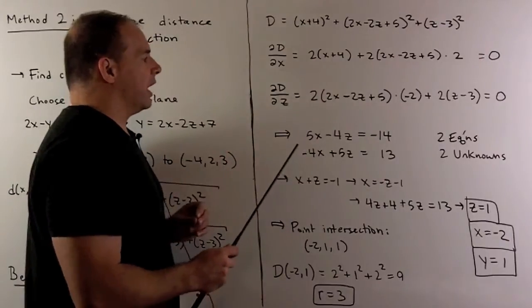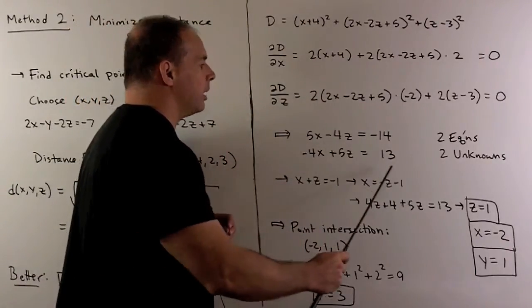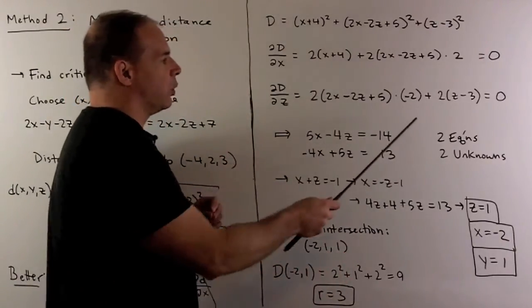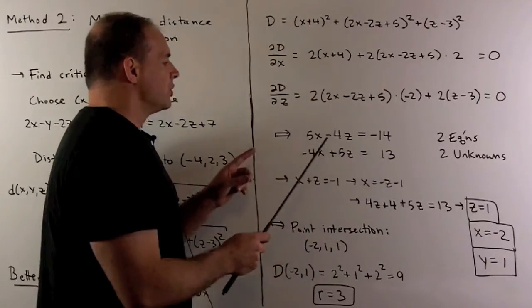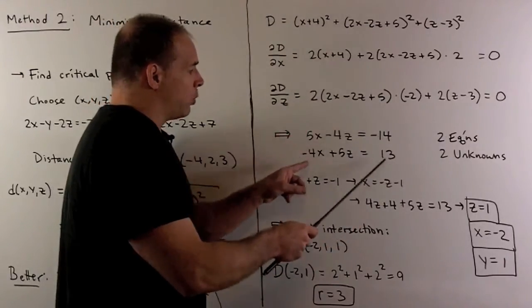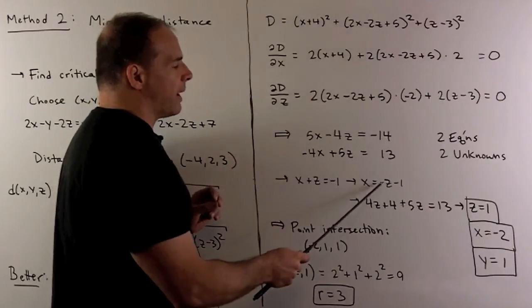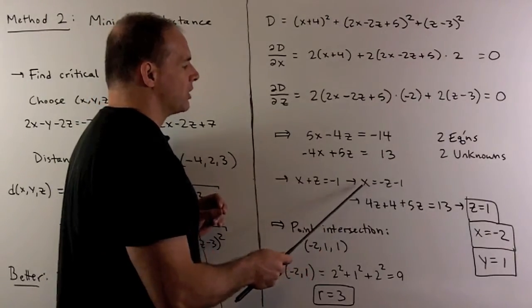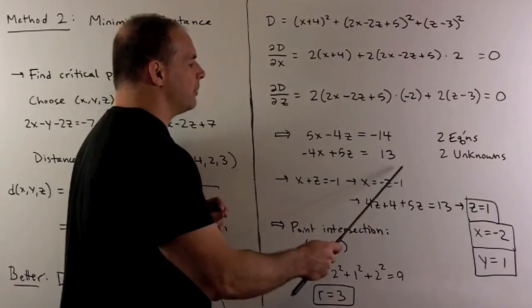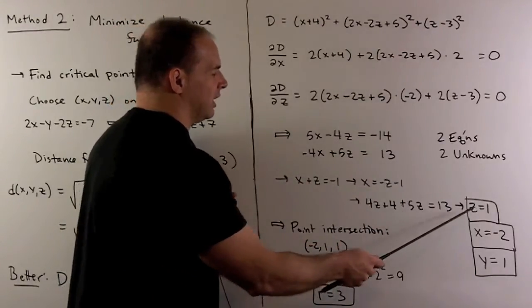Now, that gives us two equations. So we clean them up to here. Note we have two equations and two unknowns. So if we add both equations, I get x plus z equals minus one. x is equal to minus z minus one. We'll substitute this into this equation. And that's going to give me z equals one.